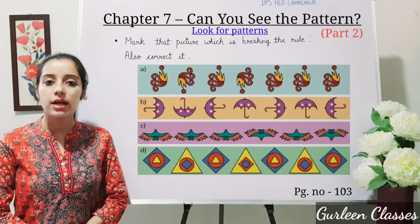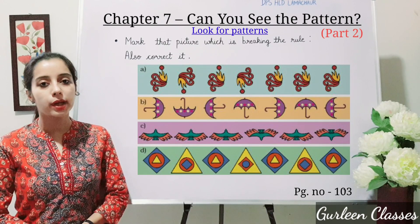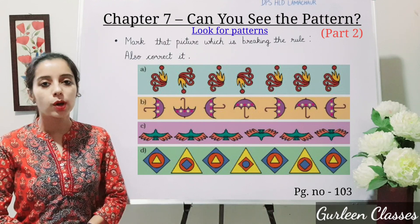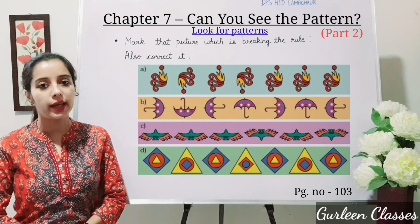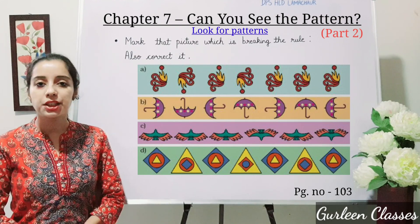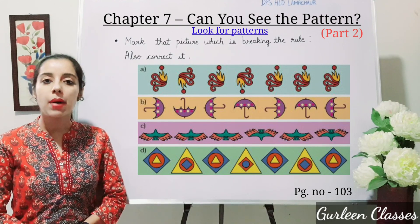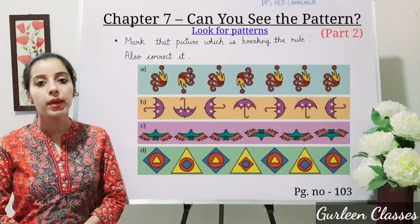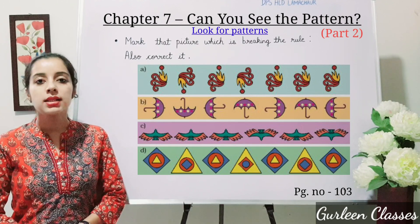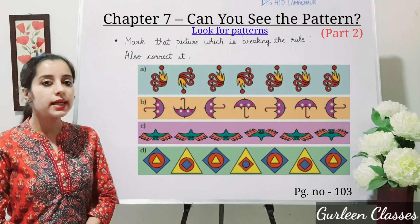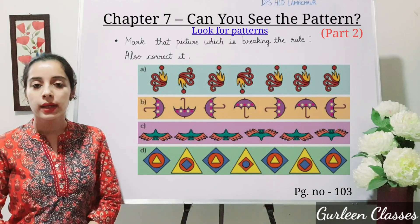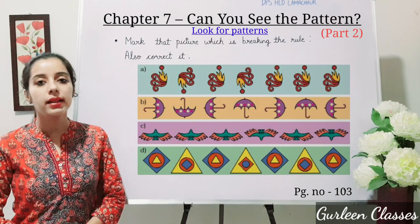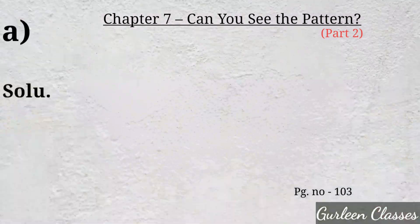Let us start with the first topic of today, given in your Maths NCRT book, page number 103. The question is: mark the picture which is breaking the rule. Also correct it. Here you can see the pictures drawn in your book. One picture is breaking the rule and we have to correct it.